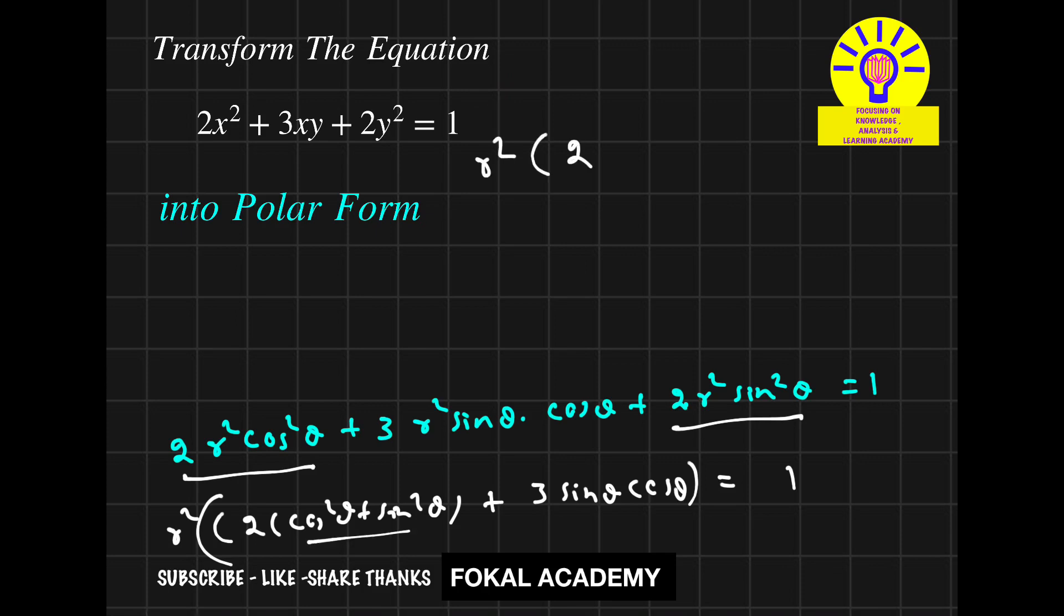So multiply with 2 and divide with 2, so it becomes 3 by 2 into 2 sin θ cos θ. 2 sin θ cos θ is sin 2θ, so it can be written as 2 plus 3 by 2 sin 2θ.